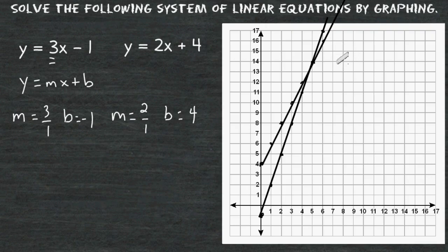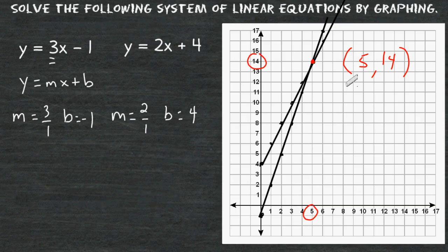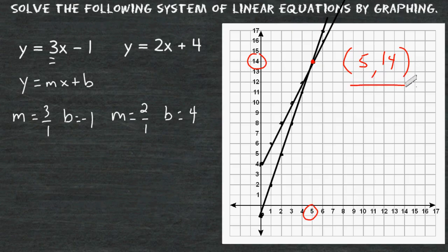Now what we should notice is that both lines intersect at this location right here. At this location, we have an x value of positive 5 and a y value of positive 14. So the coordinates (5, 14) would be the solution to this system of linear equations. This simply means if we were to plug 5 in for x in each of the equations, the resulting y value would be 14. This set of coordinates satisfies the conditions for both equations — not just one, but both. There is only one set of coordinates that works for both linear equations, and that's where those two lines intersect, making this the solution to the system.